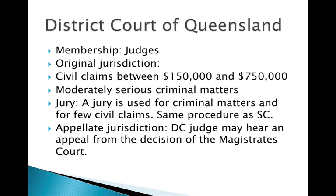Moving down the hierarchy, the District Court has judges. Their original jurisdiction covers matters involving $150,000 to $750,000 and moderately serious criminal matters. You can get a jury in some criminal matters and for a few civil claims, with the same procedures as for the Supreme Court. In terms of appellate jurisdiction, a District Court judge may hear an appeal from the decision of the Magistrates Court.